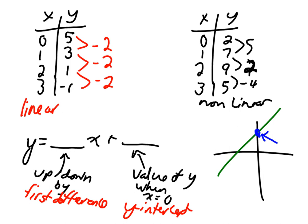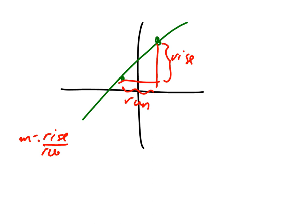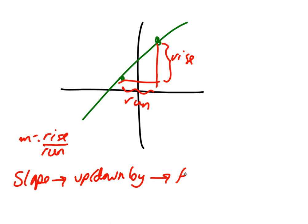Then we started to look at slope. If I have a line and I'm given two points, I could form a triangle, and I could find the rise and the run, and I could find the slope. What we're trying to figure out by looking at slope is what the line is going up or down by. So really, the slope is the same as what we're going up or down by, and that's the same as the first differences.